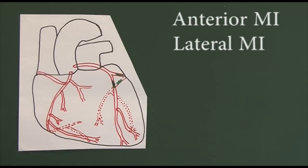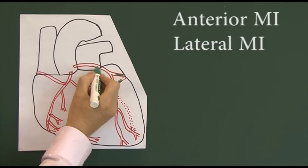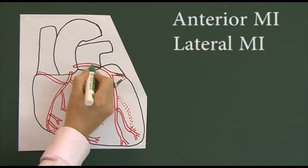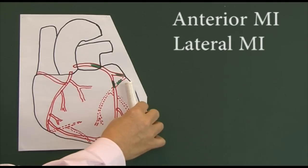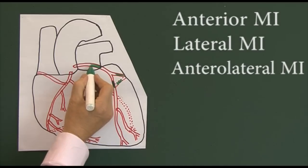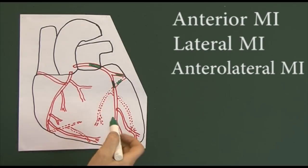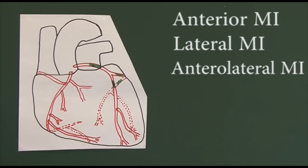Thrombus in the circumflex artery leads to a lateral infarction. And if there's a significant thrombus in the main left coronary artery, that can cause an anterolateral — a very large myocardial infarction — because if this main artery becomes blocked, blood won't get down to the LAD or around the circumflex either.